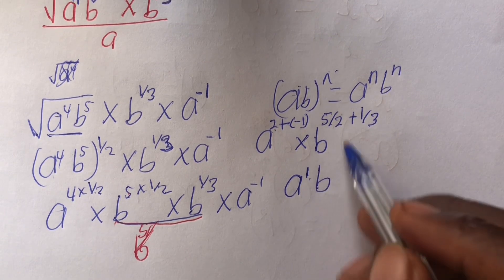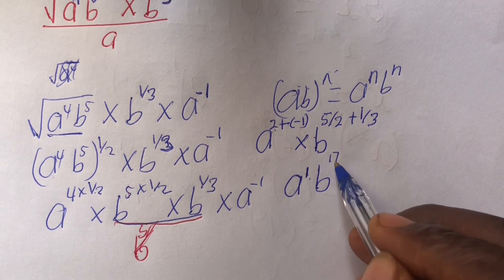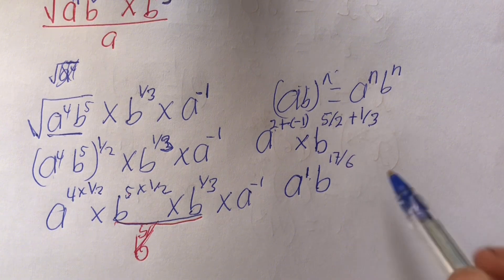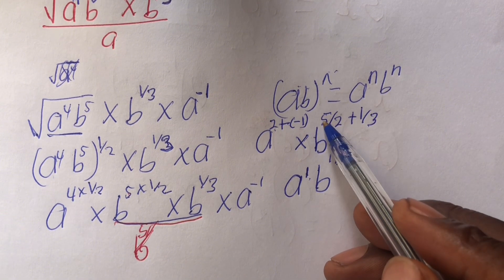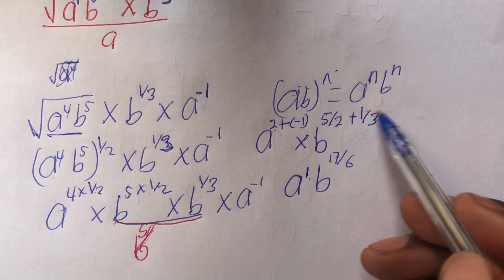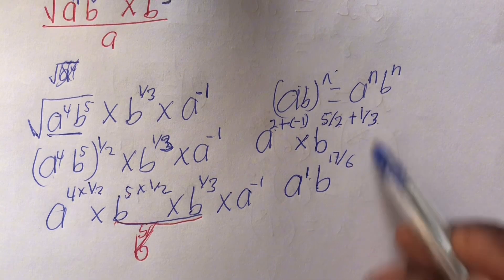Then times b power 17 out of 6. 3 times 5, 15. 2 times 1, 2. If we add, we get a 17, and 2 times 3 is 6.